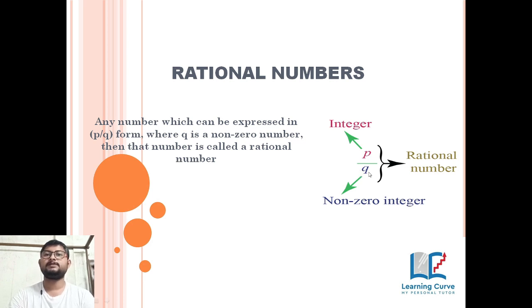Okay, it must be a non-zero number, then only we can say that it is a rational number. 4, 5, 3 - all are rational numbers. Why? Because we can write, for 5 we can write 5 by 1, for 4...